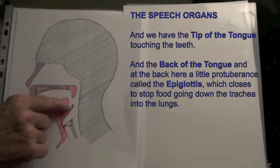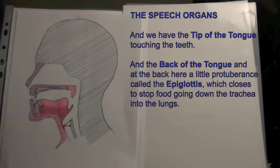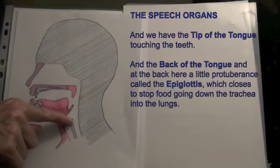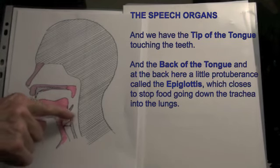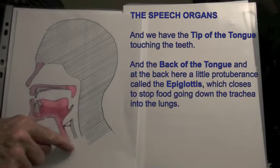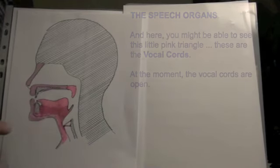And at the back here, a little protuberance called the epiglottis, which closes to stop food going down the trachea into the lungs.